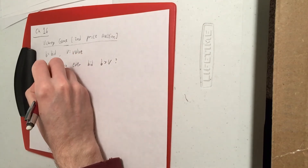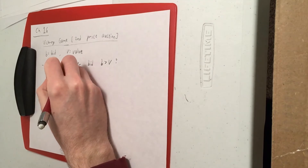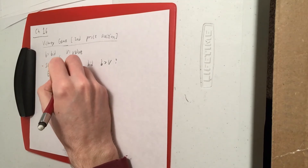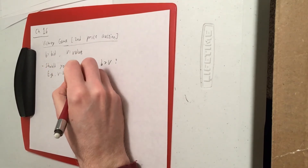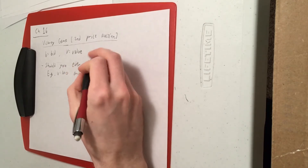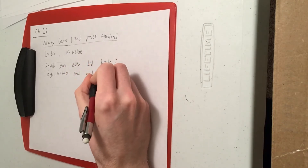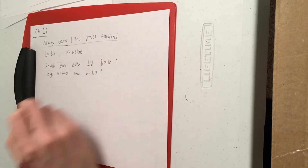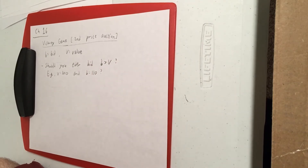Let's pick some numbers. Say the value is 100 and you pick a bid b of 110. Could that ever be the right strategy?